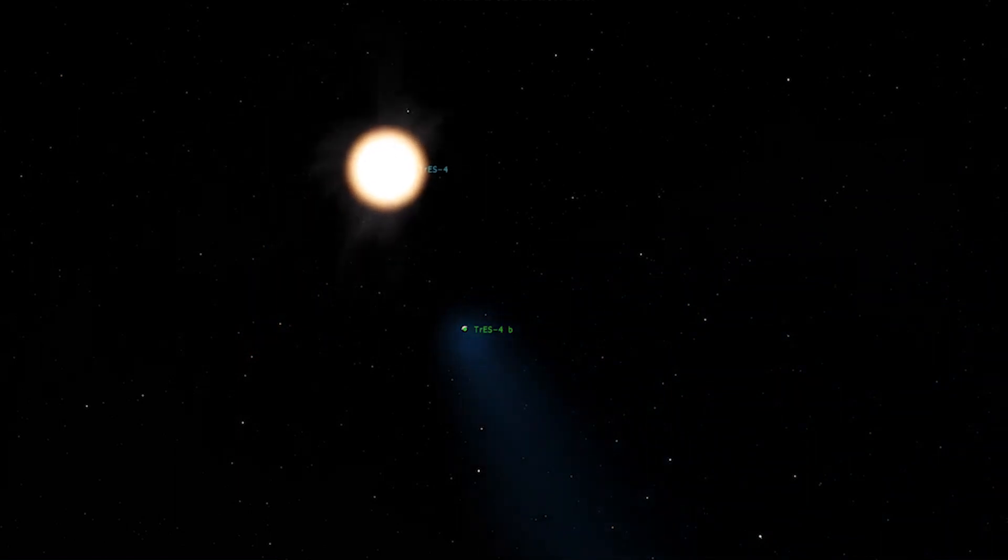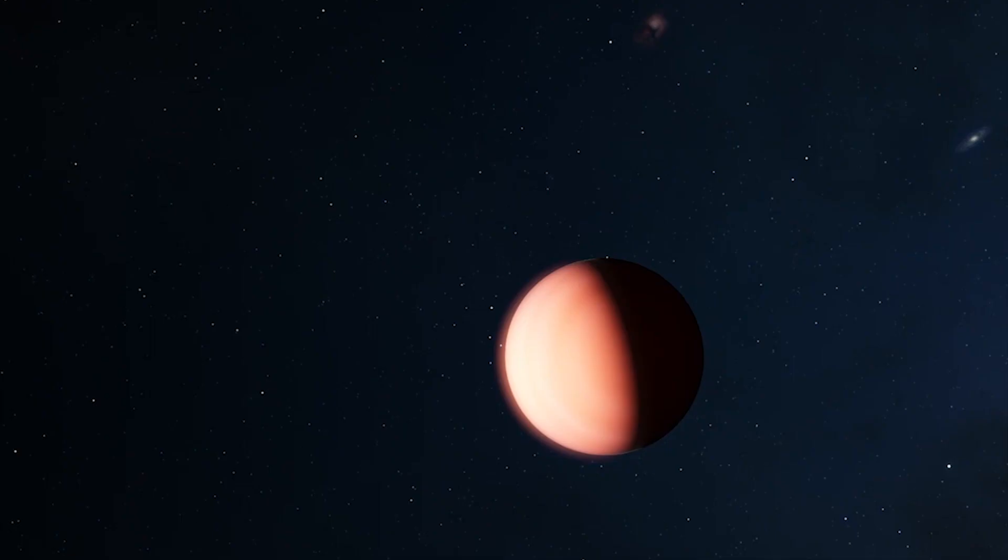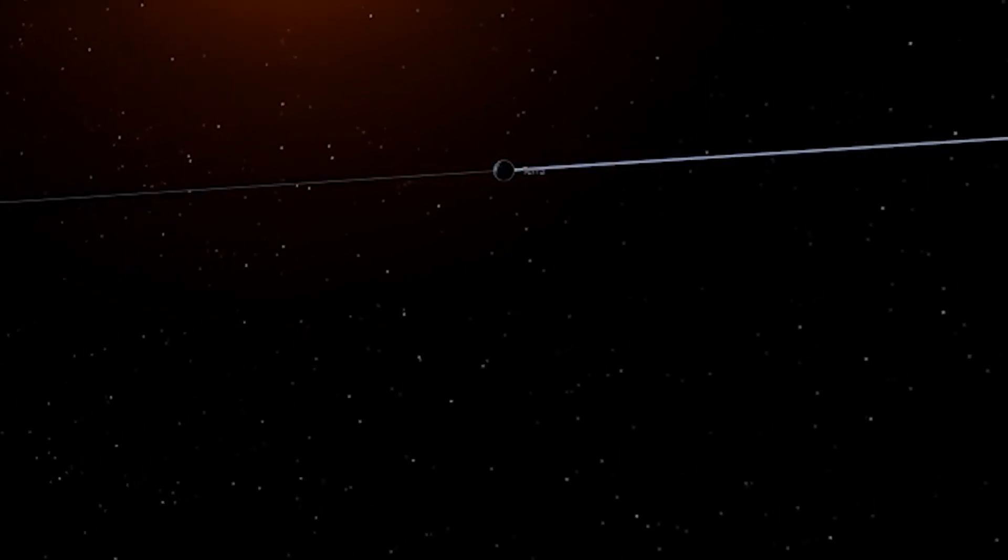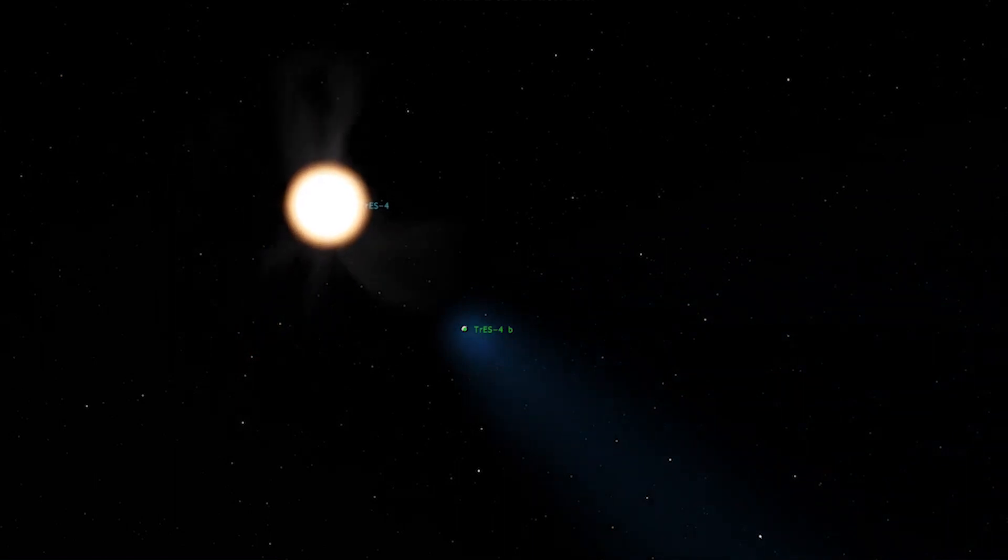In such systems, the gravitational forces of two stars interfere with the formation of planets and stable orbits. The planet Trios 4b is a gas giant similar to Jupiter and is located very close to its star, only 2.8 million miles away. For comparison, the distance from the Sun to Mercury is 36 million miles and to Earth 92 million.